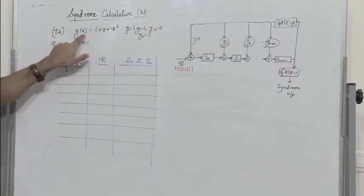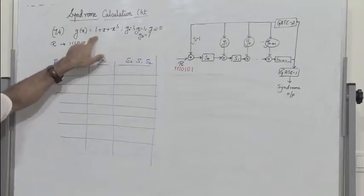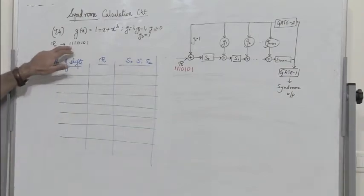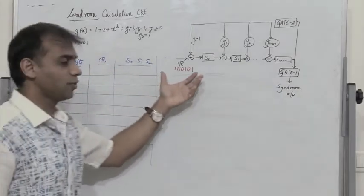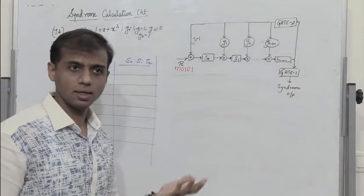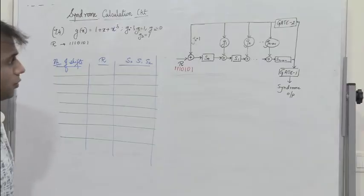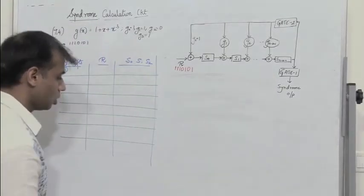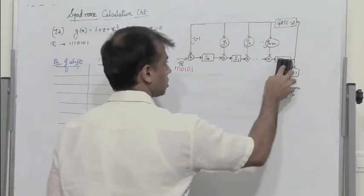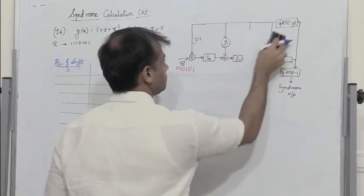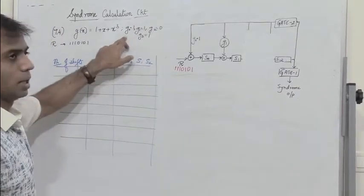G(X) = 1 + X + X³, so G0 = 1 (coefficient of X⁰), G1 = 1, G2 = 0 (coefficient of X²), and G3 = 1 (coefficient of X³). Let us assume that the received polynomial is 1110101. We need to verify whether it has an error. Since this is a 7,4 cyclic code, we need 3 flip-flops: S0, S1, and S2.